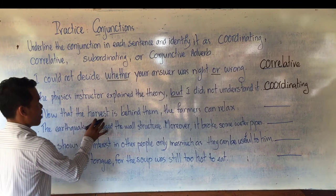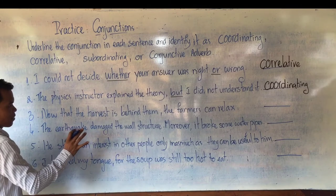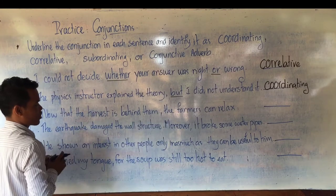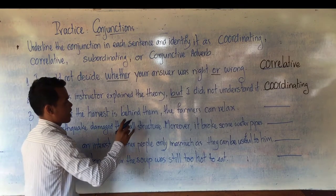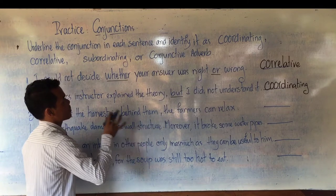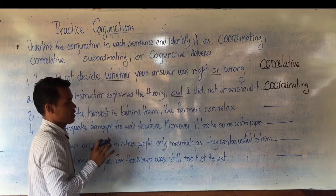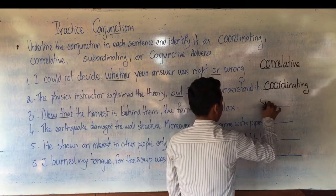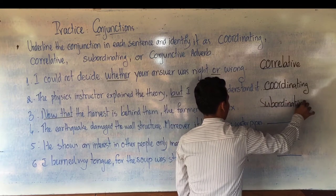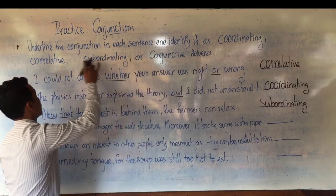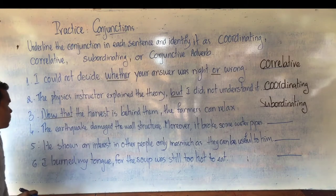Number three: 'Now that the house is behind them, the farmer can relax.' Two sentences joined by a conjunction — which one? 'Now that.' It is not coordinating, not correlative, not conjunctive adverb — of course it is subordinating conjunction.